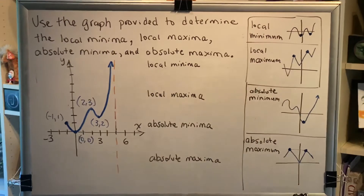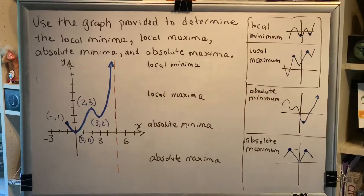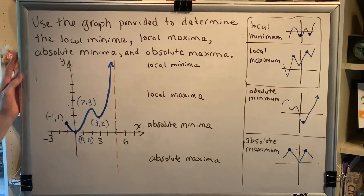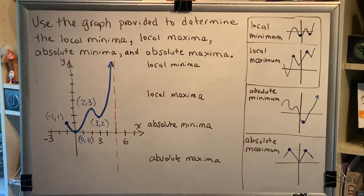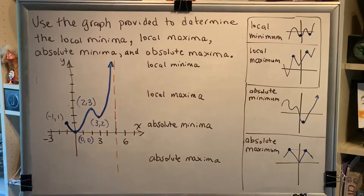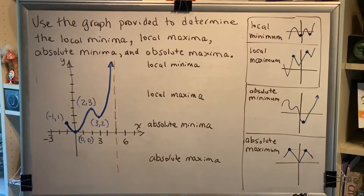The topic of this video is using a graph to find local and absolute maxima and minima. Here's a problem: use the graph provided to determine the local minima, local maxima, absolute minima, and absolute maxima. Notice that I've listed a place here where we can put our answers, and this is the graph that's been provided. Now before we solve this problem, let's look at an example of each one of these.